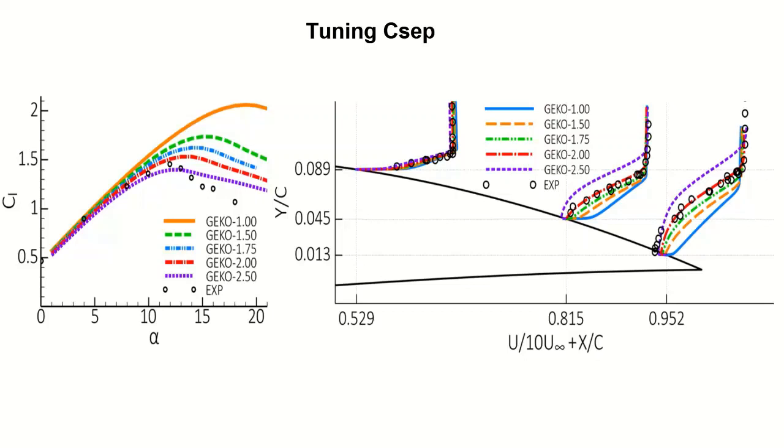In the following test of an NACA 4412 airfoil at higher angles of attack shown on the left, a CSEP value of 2 to 2.5 more accurately predicts the lift coefficient. At a 12 degree angle of attack shown on the right, the velocity profiles in the area of separation near the trailing edge of the airfoil show that CSEP equal to 2 in red more closely matches the experimental data.